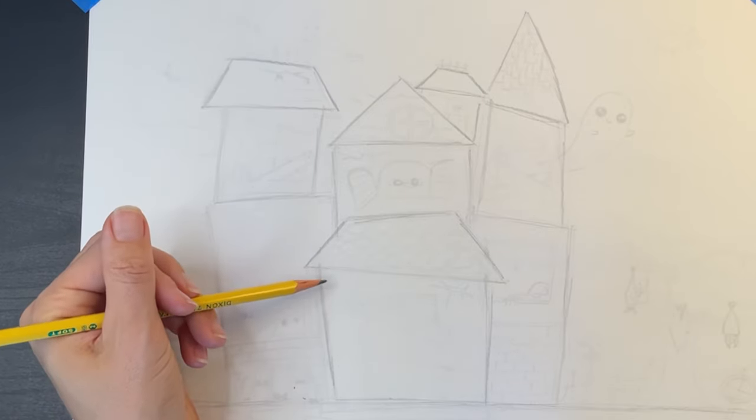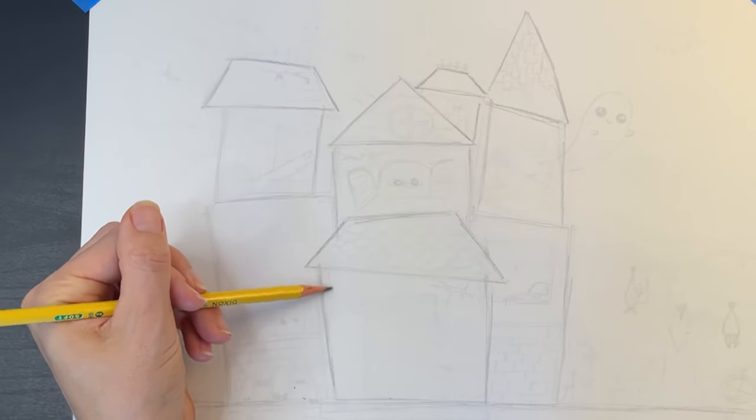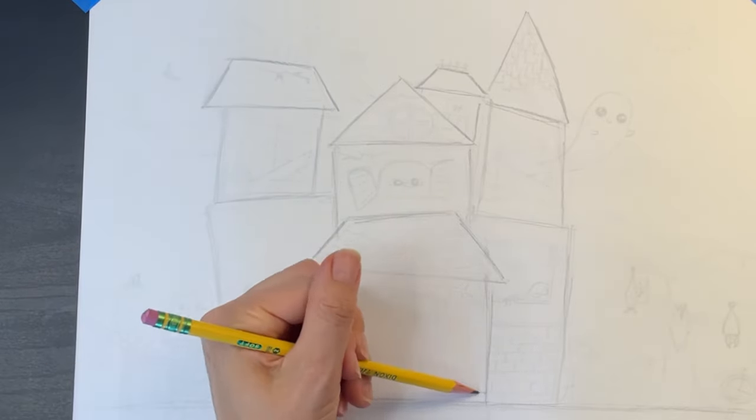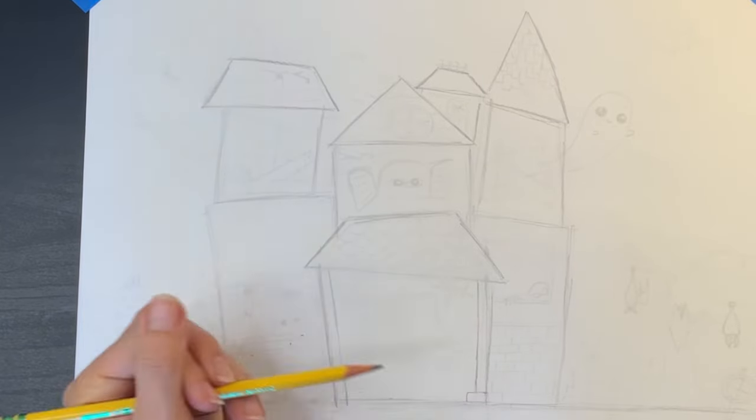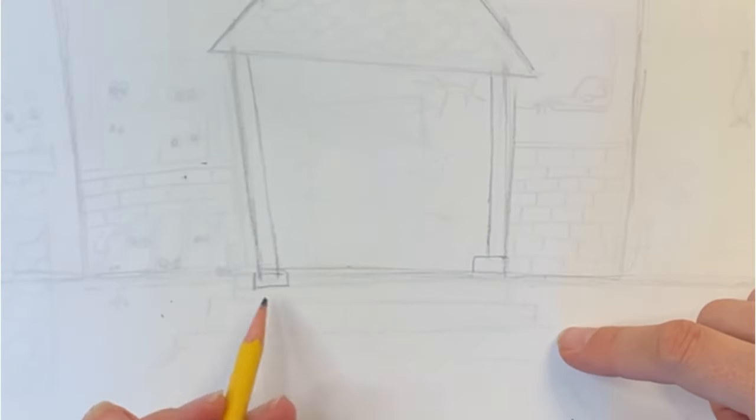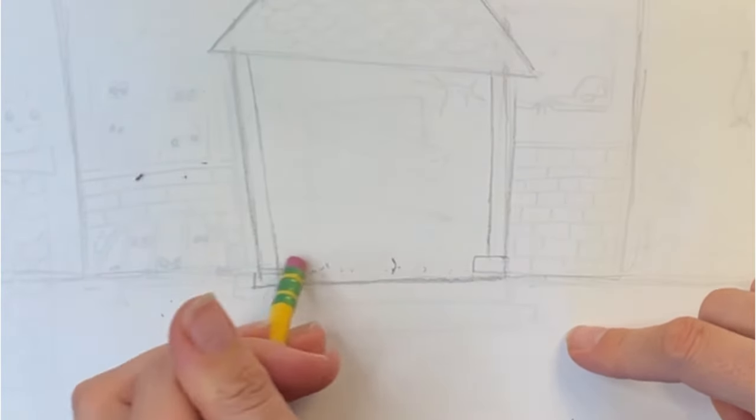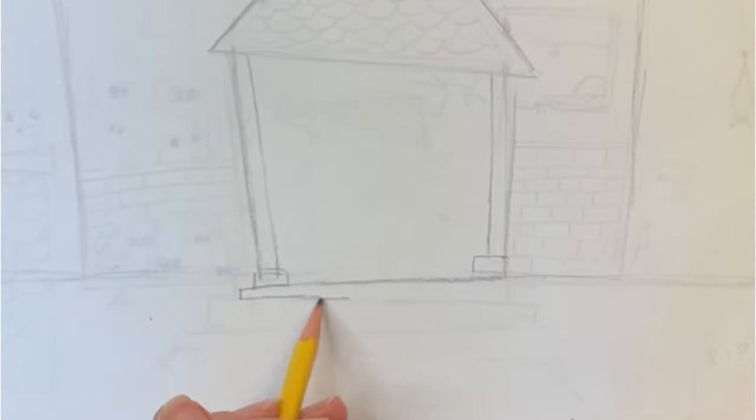Now you can start adding some fun details to your house. I'm drawing a couple long thin wooden posts in the front of the house. For steps I'm drawing long crooked rectangles right on top of each other. Notice how each rectangle step is a little bit longer than the one above it.